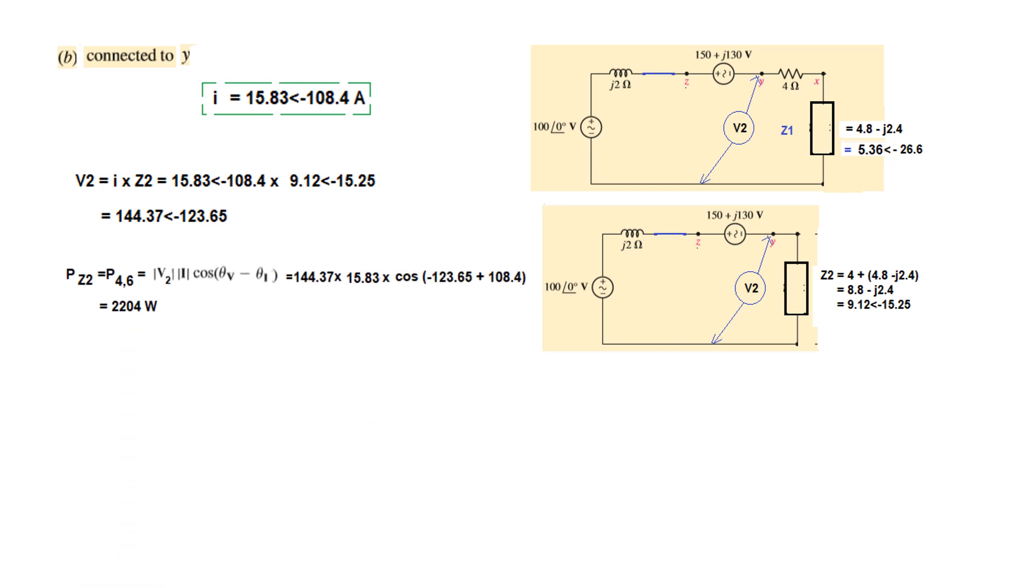Power, same form: P equals z2, which is, as I mentioned, the power is only absorbed by the resistive elements. That's why it's written four and six. This is four and there's a six ohm resistance here. So v2 magnitude 144.37 multiplied by magnitude of current times cos theta v. Theta v is minus 123.65 minus minus 108 from here, so it becomes plus. The answer is 2204 watts. In the book it's given 2200 watts, again we're very close. Same conclusion: since it's a positive sign, that means power is being absorbed by these two resistances, 4 and 6 ohm resistance.